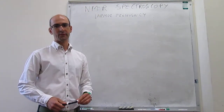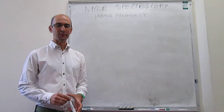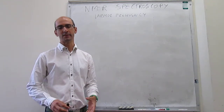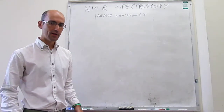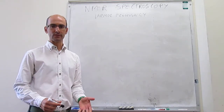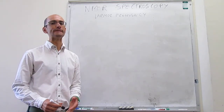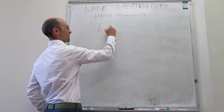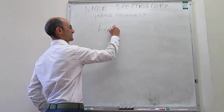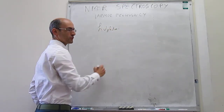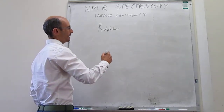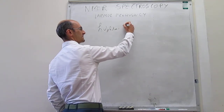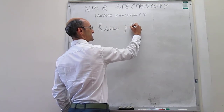In this video we continue to advance our understanding of NMR spectroscopy by focusing on something called the Larmor frequency. In a prior video we have seen what the resonance condition is for NMR spectroscopy: the energy of the photon has to be identical to the energy separation between two nuclear spin states, and for nuclei like the proton this is given by a specific expression.